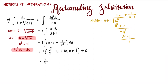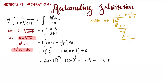Substituting back: u squared is (x plus 1) raised to the power of 2/3, since u equals the cube root of x plus 1. So the answer is 3/2 times (x plus 1) to the 2/3 minus 3 times (x plus 1) to the 1/3 plus 3 ln of the cube root of x plus 1, plus 1, plus C.